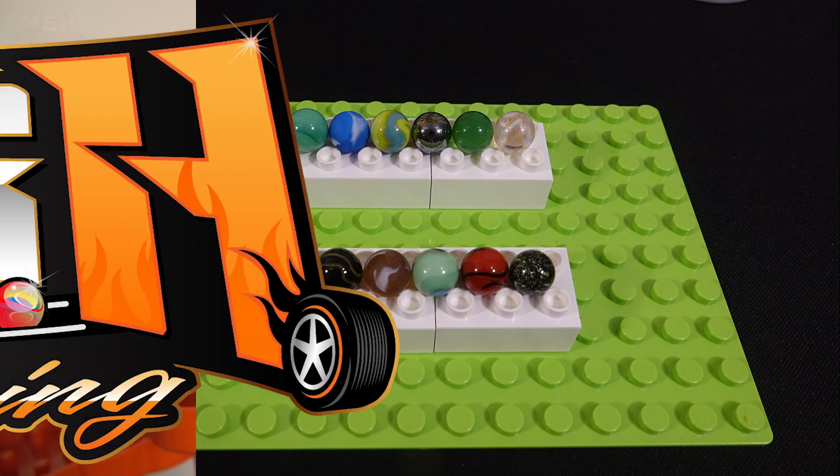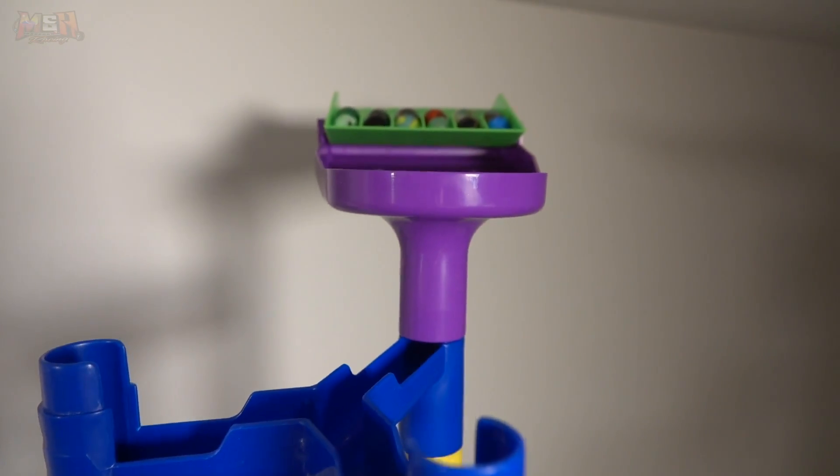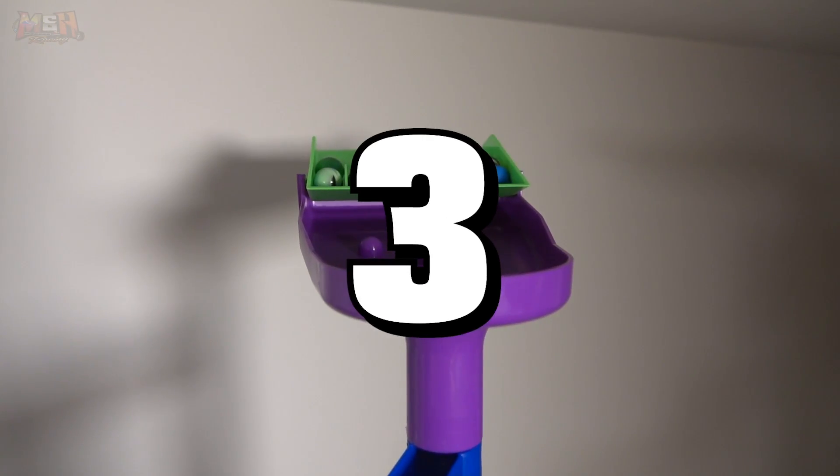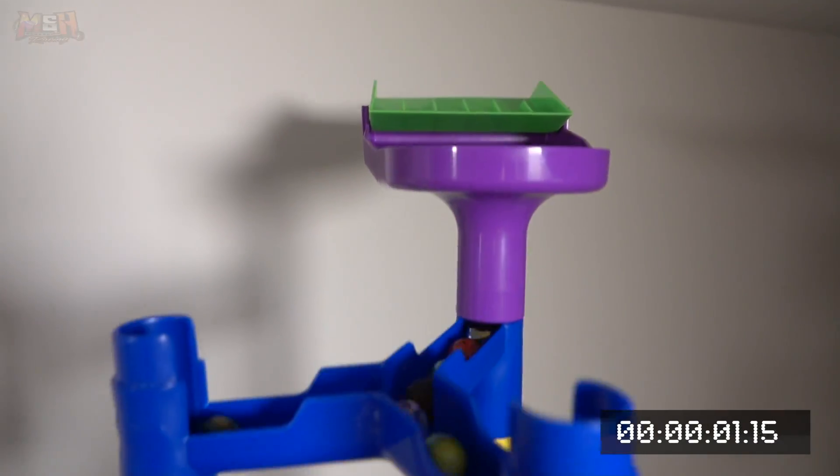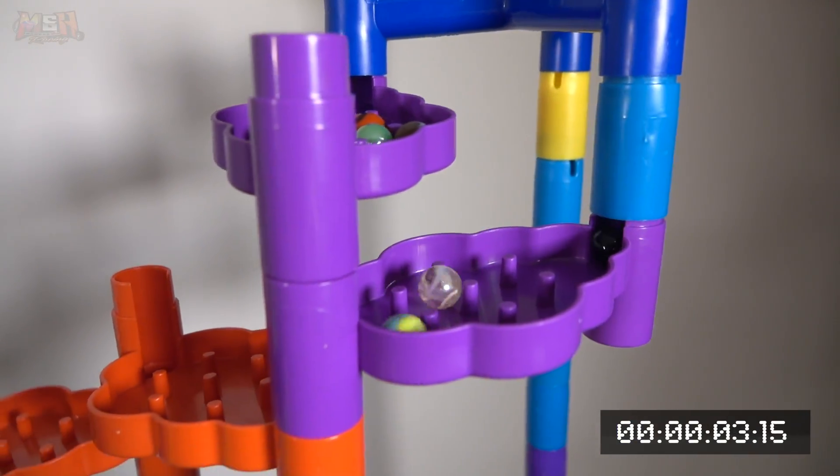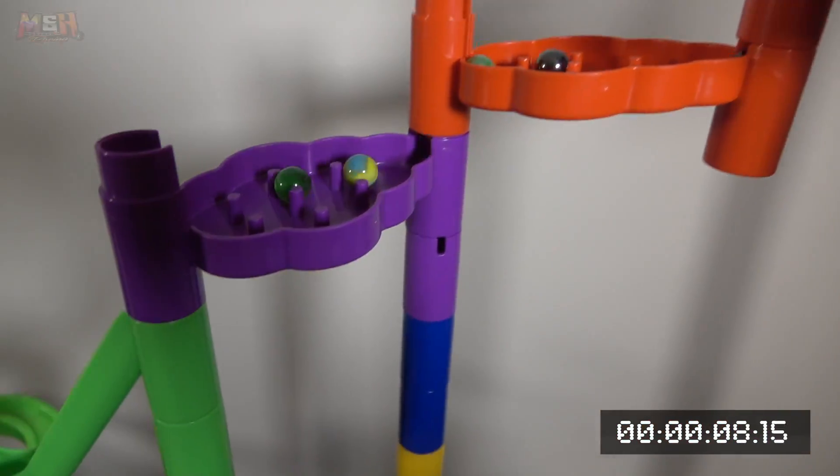Both teams will be competing for points in three races, and the team with the most points once all is said and done will be the winner. Here we go on the starting grid. To make it fair, we have three marbles for Minecraft and three marbles from Fortnite in the first row. The losing team from each race will be in the front for the next race.